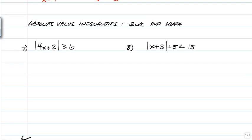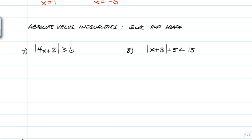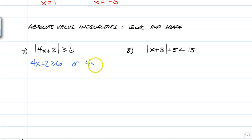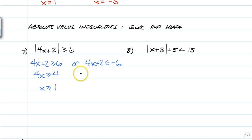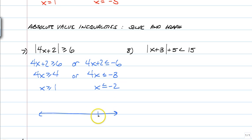Last two problems: absolute value inequalities. Absolute value inequalities are going to be either an AND or an OR statement — remember, we have greater than and less than. So for this one, we set the inside: 4x plus 2 is greater than or equal to 6, or 4x plus 2 is less than or equal to negative 6. Solving both pieces: 4x is greater than or equal to 4, so x is greater than or equal to 1. Or 4x is less than or equal to negative 8, so x is less than or equal to negative 2. We have our 1 and our negative 2 — solid circle to the left on negative 2, solid circle to the right on 1. It is an OR statement; that's what it's supposed to look like.